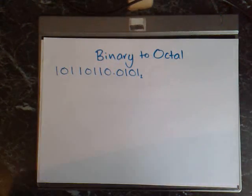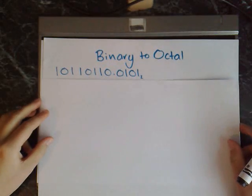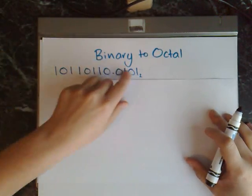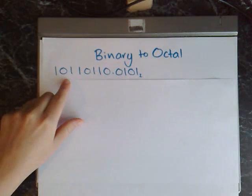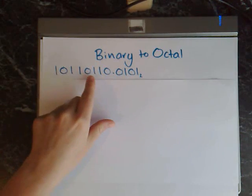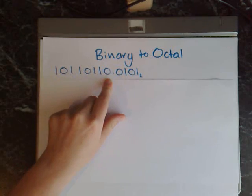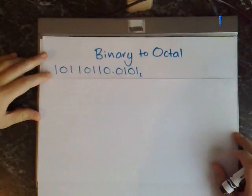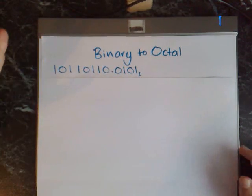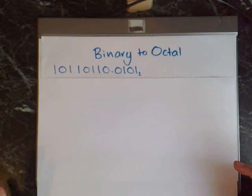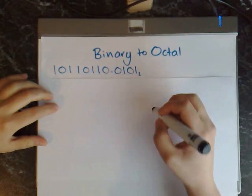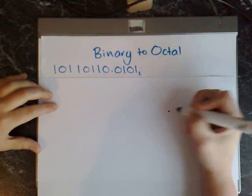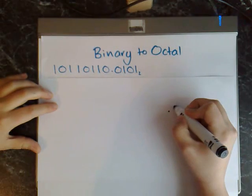For the second example I'm going to go from binary to octal, and I'm going to use the same binary number as before: 101 101 10.0101. What we do now is instead of separating it into groups of 4, you separate it into groups of 3. Start at the decimal and work your way outwards when you separate it.